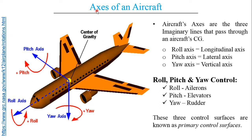Here we need to establish the axes of an aircraft. Axes is the plural term for axis. These aircraft axes are three imaginary lines which pass through the aircraft CG and are used to explain the motion of an aircraft. If the aircraft rolls, the axis about which it rolls is known as the roll axis.